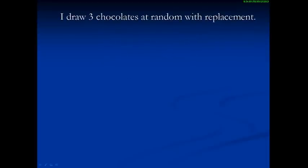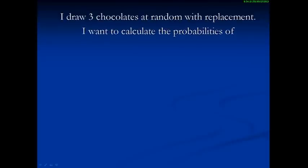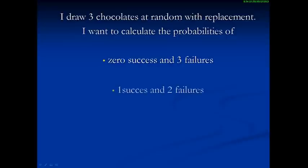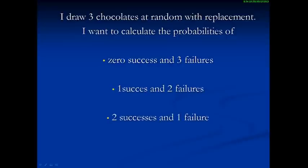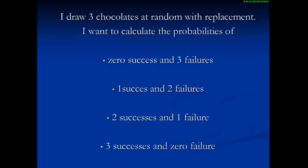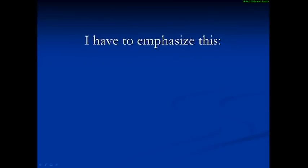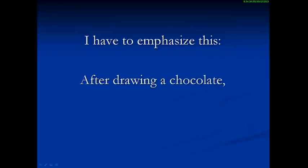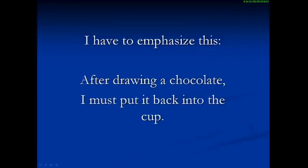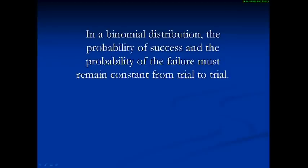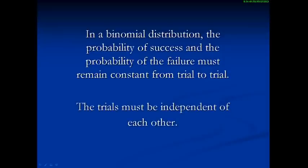I draw three chocolates at random with replacement. I want to calculate the probabilities of 0 successes and 3 failures, 1 success and 2 failures, 2 successes and 1 failure, and 3 successes and 0 failures. After drawing a chocolate, I must put it back into the cup. In a binomial distribution, the probability of success and the probability of failure must remain constant from trial to trial, and the trials must be independent of each other.